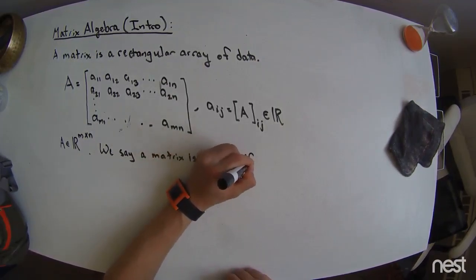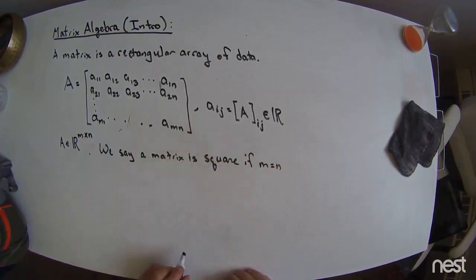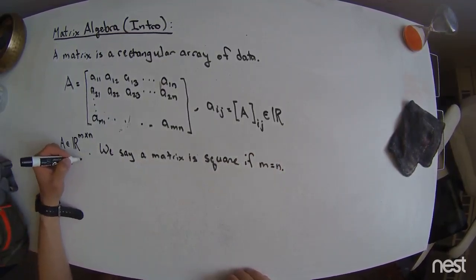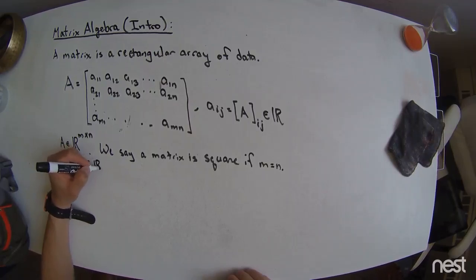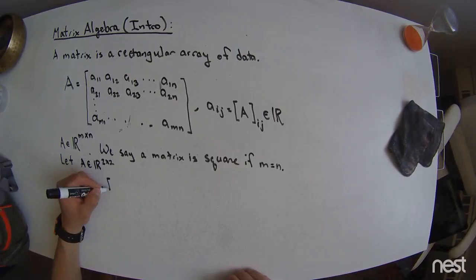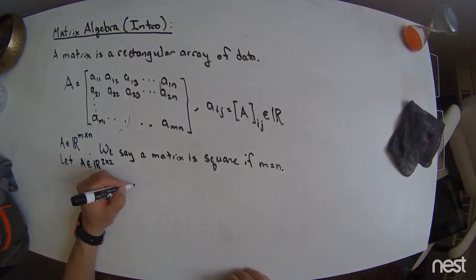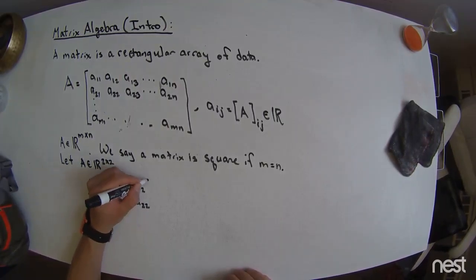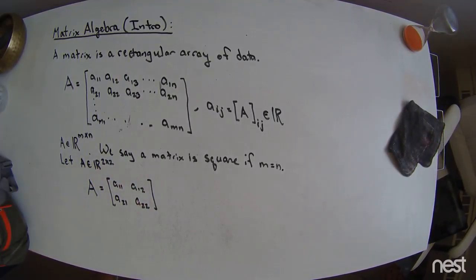And another way to say that is that the A matrix is filled up with real numbers and has M rows and N columns. And of course you can make it more complicated than this, but this is all we're going to need. And in fact, we say a matrix is square if M is equal to N. And so let's just say let A be an R 2 by 2. That means that A is going to be a matrix that has four components, A11, A12, A21, A22.